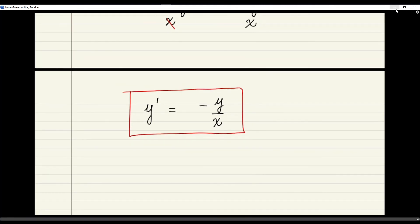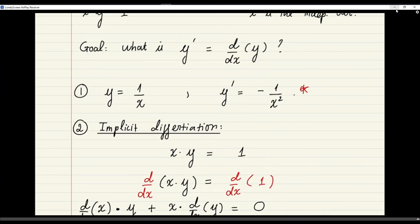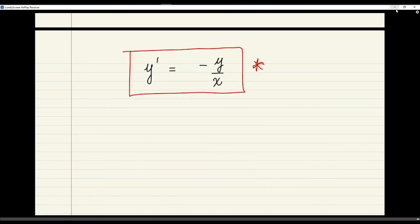Well, let's check to see if this solution is the same as the solution we have earlier when we do things explicitly. Recall that we can write y as 1 over x. So I am plugging 1 over x into y here. We get that y prime is equal to negative 1 over x divided by x. And it is not hard to check that this is the same as negative 1 over x squared.